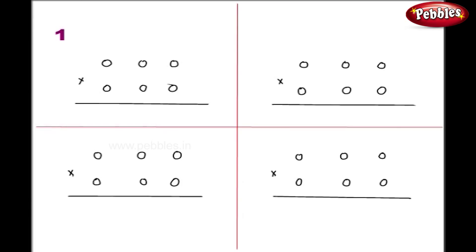In step number 1, we will multiply the numbers in the first column and write their product here. In step number 2, we have to multiply crosswise in column 1 and column 2 and write the addition of their products here.